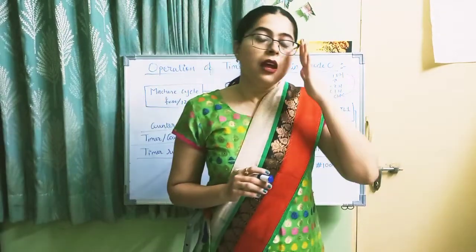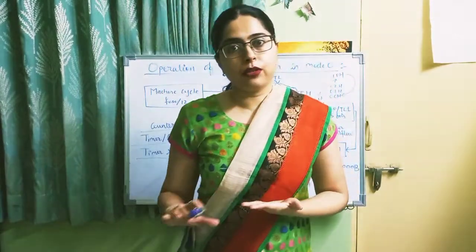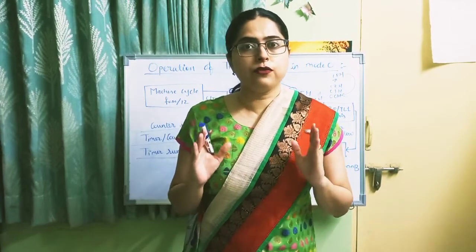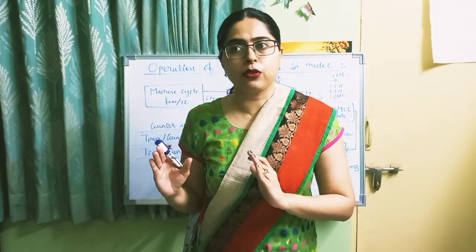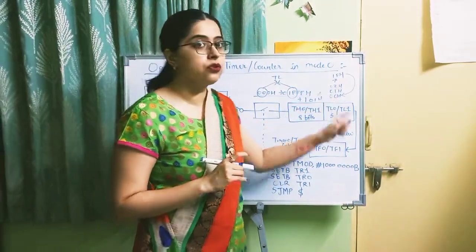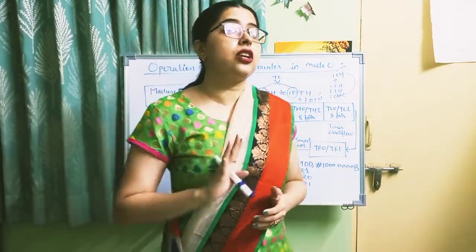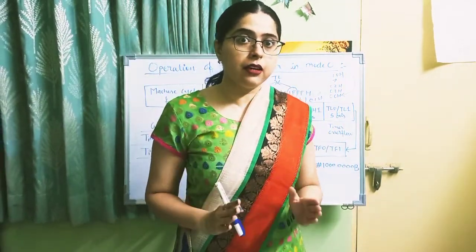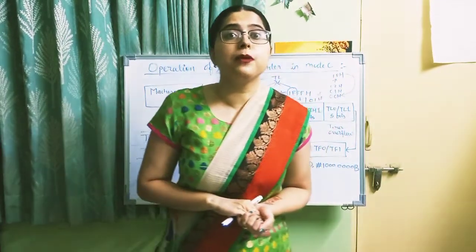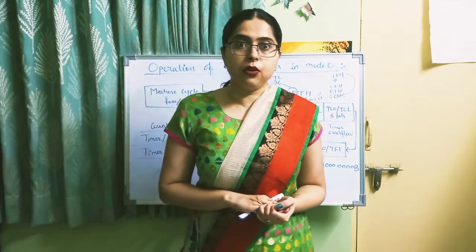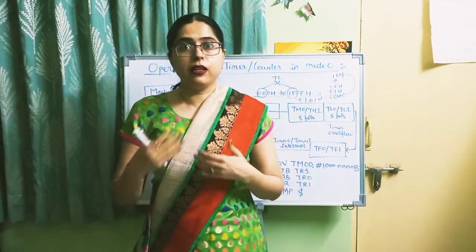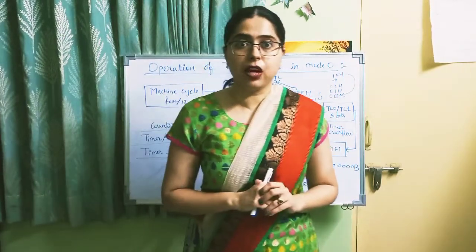When all bits of Timer 0 roll over - that is, when TH0 is FFH and TL0 rolls over from 1FH to 00H - an interrupt is generated. It is vectored to 000BH for Timer 0 and 001BH for Timer 1, and then the corresponding processes execute.